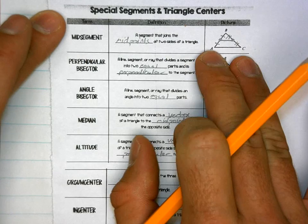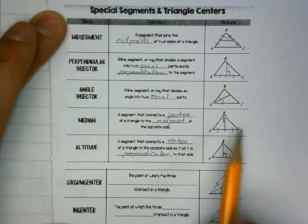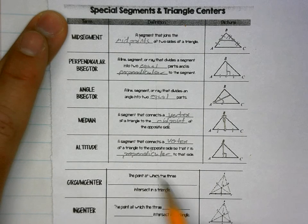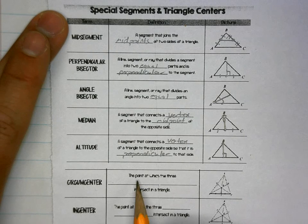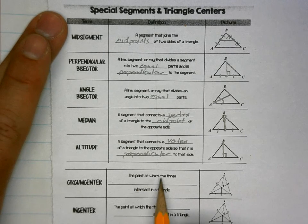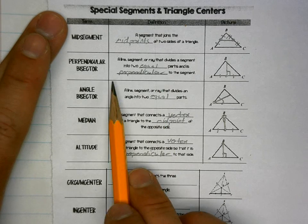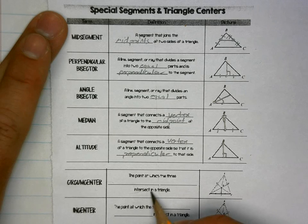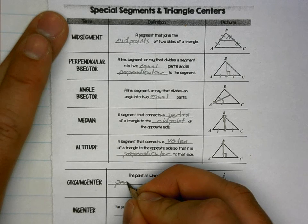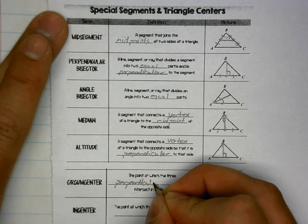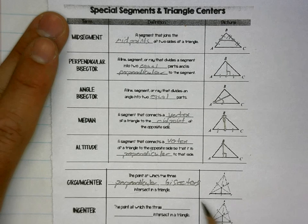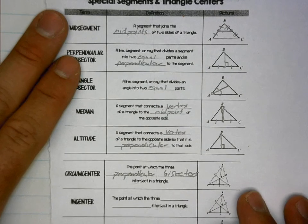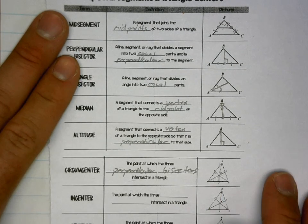Now we're going to take everything we've learned, and if we draw three perpendicular bisectors or three angle bisectors in each triangle, we create centers in the triangle. The first center is the circumcenter — the point at which three perpendicular bisectors intersect in a triangle. The picture shows three perpendicular bisectors drawn, and where they all intersect is called the circumcenter.